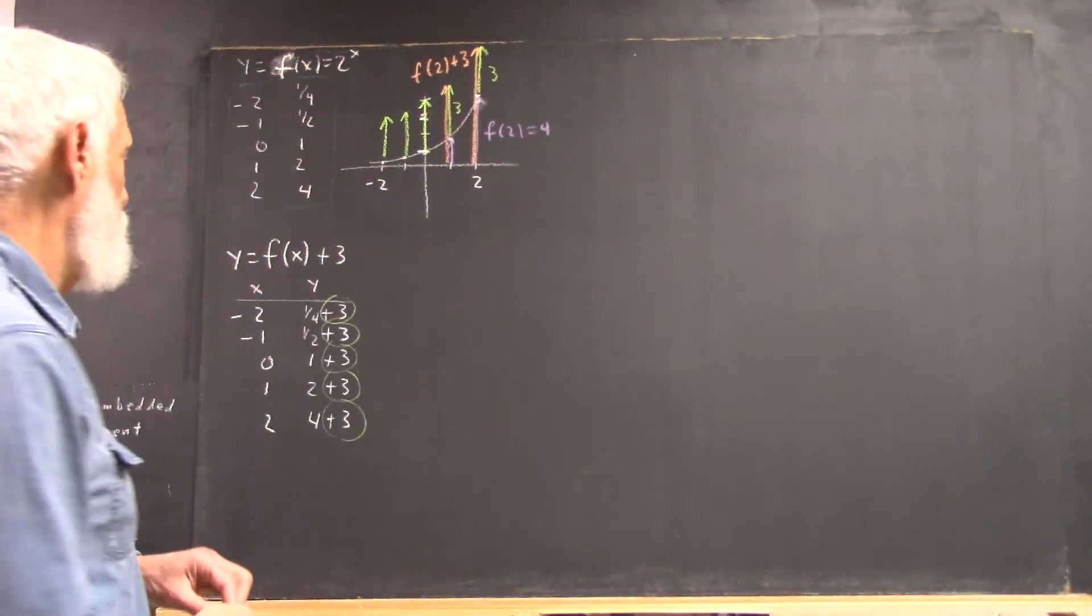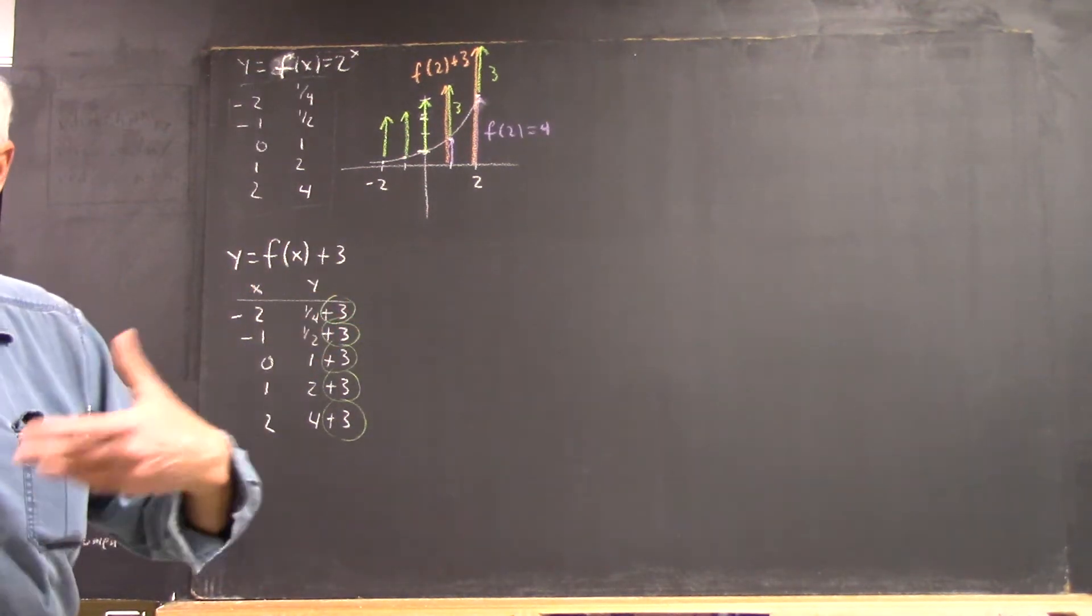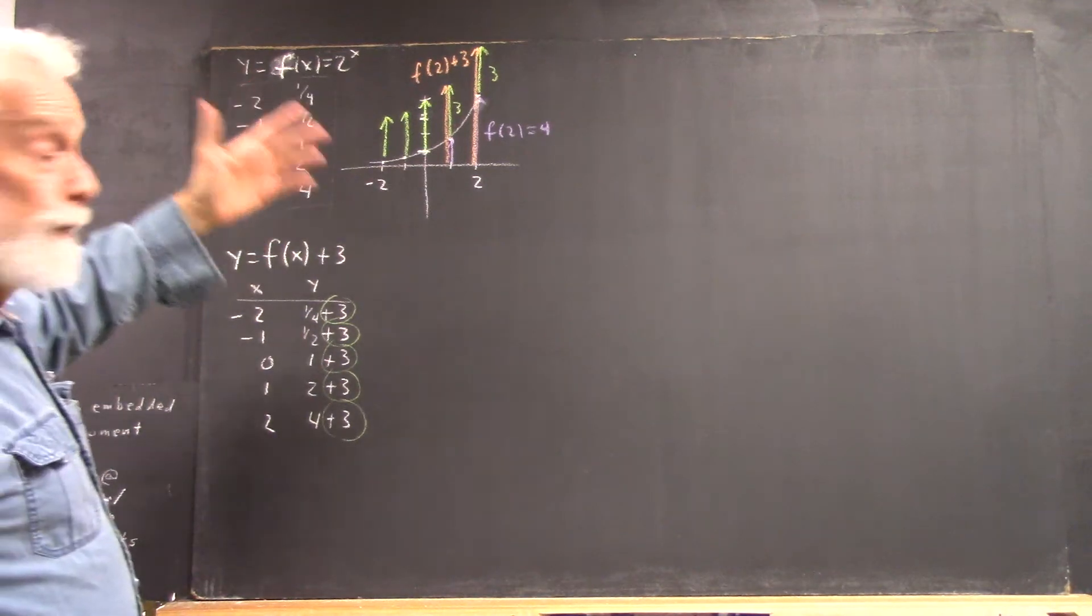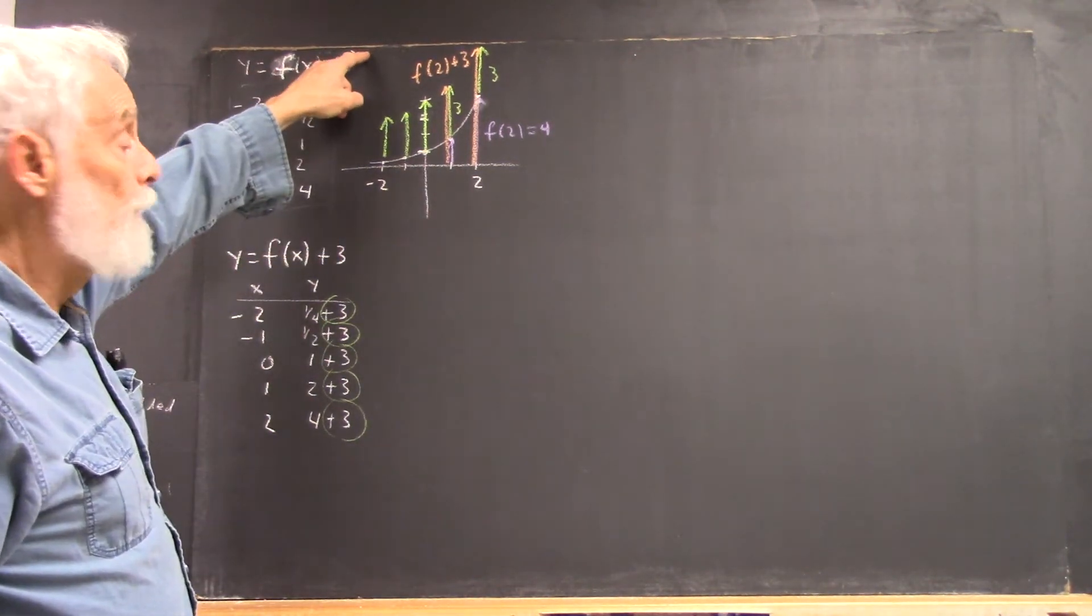Okay, we had a question about an expression like f of x plus 3, how do we graph that if we know the f of x graph? So, as a specific example, we use the y equals f of x equals 2 to the x function.